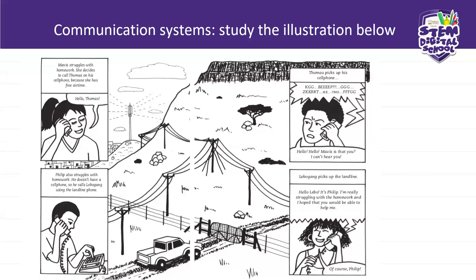We are comparing the landline phone and the cell phone, because for us to erect a cell phone tower we need a purpose for that — why are we doing it? It's a way of communication, but we do have existing communications like the landline. We must discuss why we need to have cell phones. In this scenario, Mavis struggles with homework and decides to call Thomas on his cell phone. Thomas picks up his cell phone.